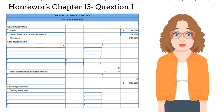Next is cost of goods sold. This section begins with the merchandise inventory as of January 1, then we add purchases and freight in to arrive at delivered cost of purchases. Finally, once we subtract the merchandise inventory as of December 31, we arrive at the cost of goods sold.